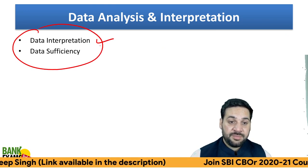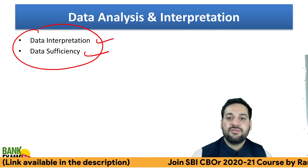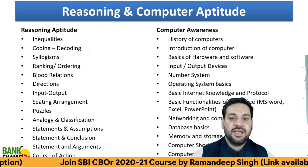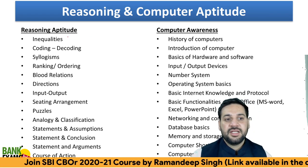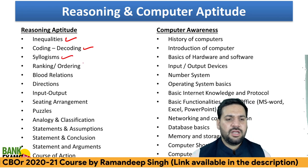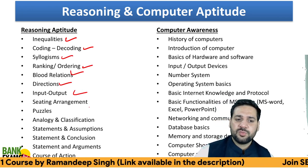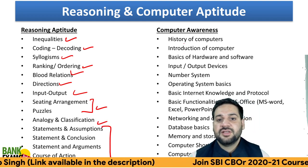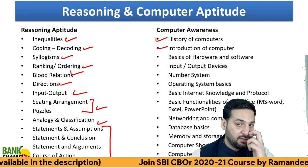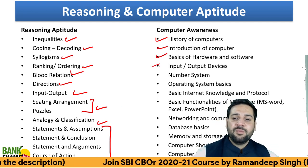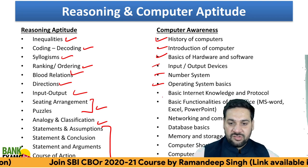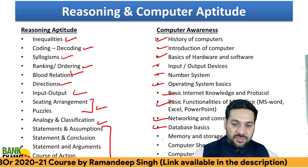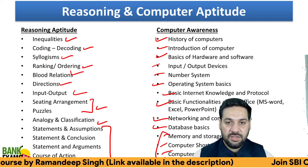For data analysis and data interpretation, there is just data interpretation and data sufficiency — there will be no quantitative aptitude. For reasoning ability, the topics include: inequalities, coding-decoding, syllogisms, ranking, blood relation, direction sense test, input-output, seating arrangement, puzzles, analogy, and logical reasoning. For computer awareness: history of computers, introduction to computers, number system, input-output, operating system basics, networking — which is very important — basics and functions of MS Office, database basics, memory and storage, computer shortcuts, and computer abbreviations.